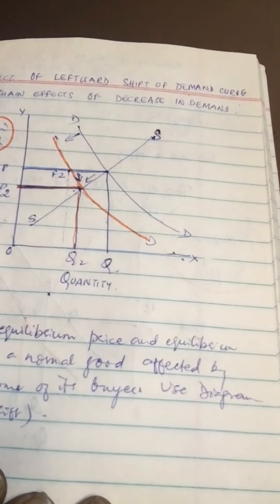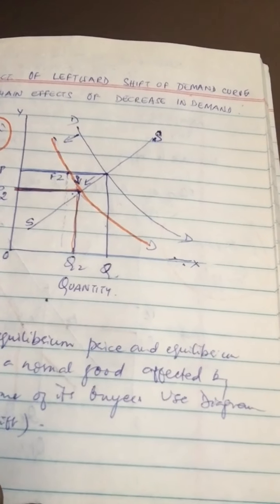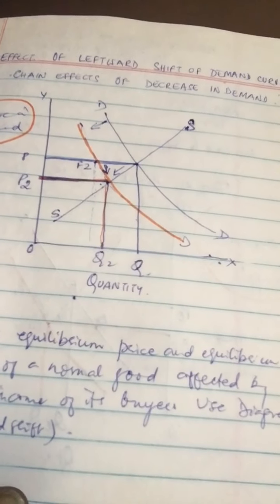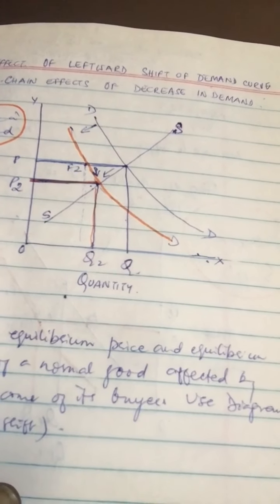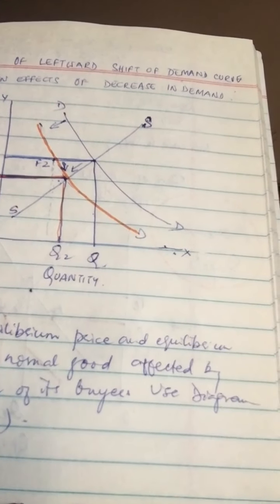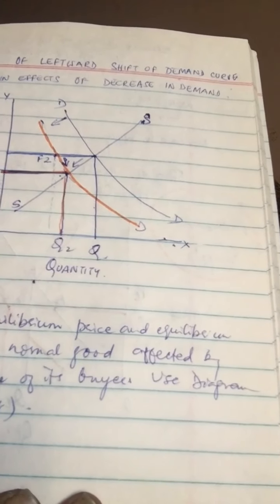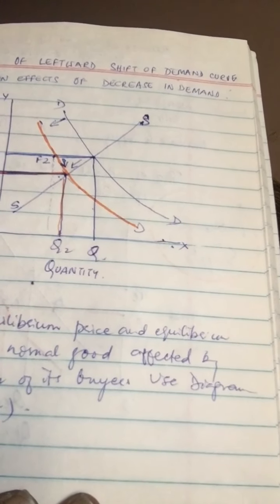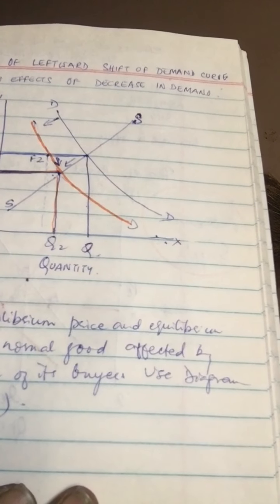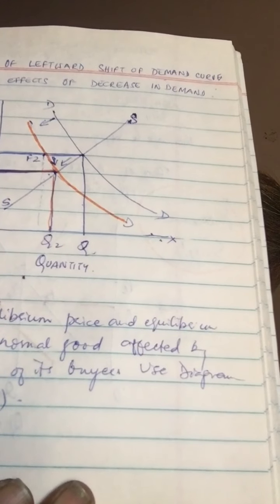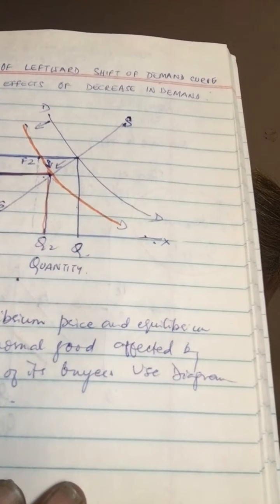The price falls from OP to OP2 and supply falls from OQ to OQ2. The downward movement on the demand curve shows expansion of demand, and the downward movement on the supply curve shows contraction of supply. A new equilibrium is established at E2, bringing the market price to OP2 and the new equilibrium quantity to OQ2. When you get a question like this, you must explain the chain effects — covering both increase and decrease in demand.